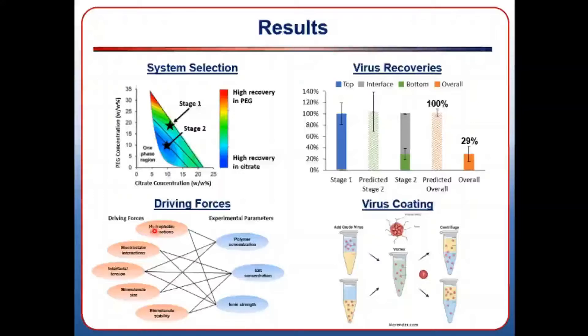We chose a system that gave high recovery of PPV in the top, PEG-rich phase, to make the first stage, and another that recovers the virus in the bottom, citrate-rich phase for the second stage.